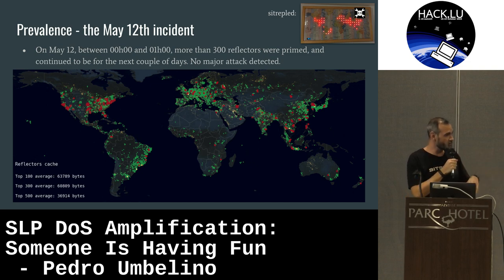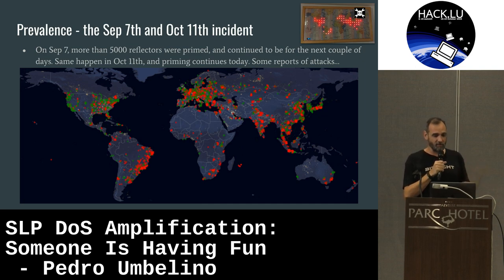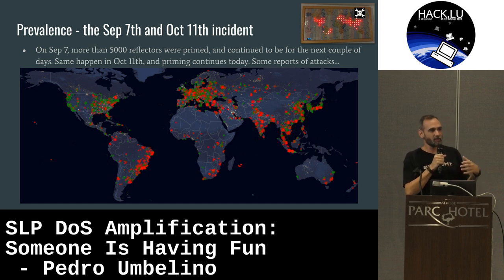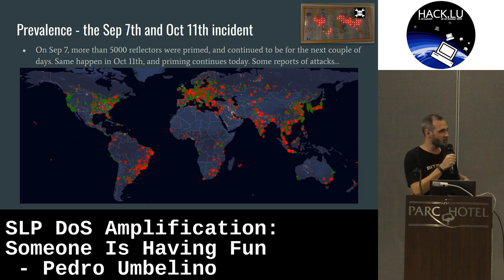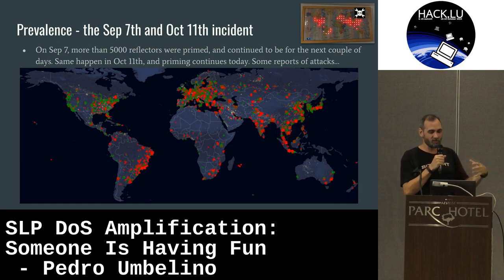Suddenly on May 12th, some lights started to blink — I have a small project in my office that blinks when something happens. Someone started to play around: 300 reflectors were primed. It was strange, but nothing happened and I detected no attack. Up until September 7th, and lastly on October 11th, more than 5,000 reflectors were primed. We could see they were using a custom tool — not the open-source tool available for scanning. Someone is having fun out there, priming servers, and we have no reports of big attacks yet, but we can see someone doing something.